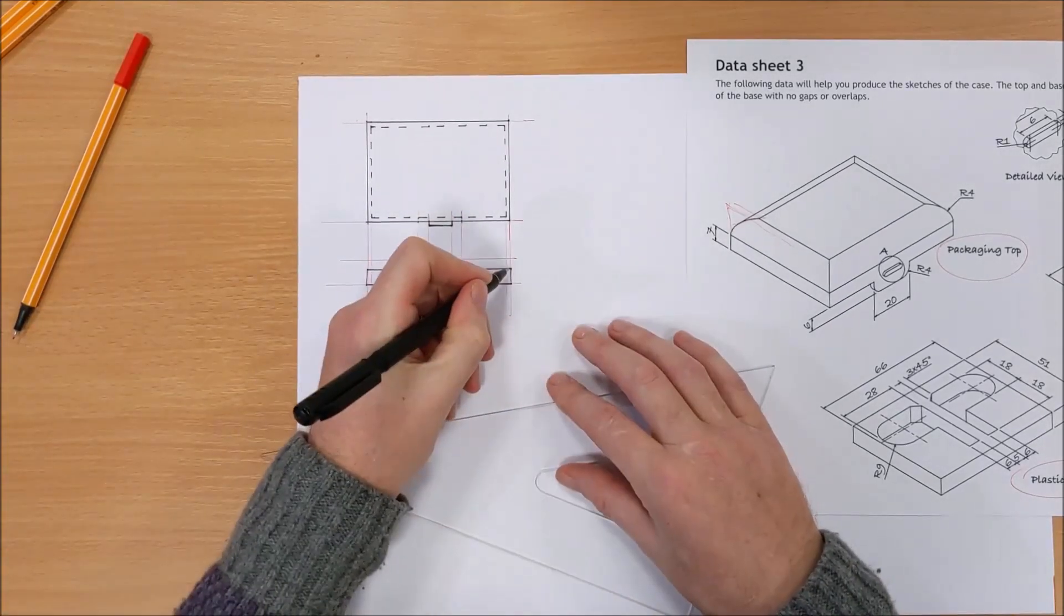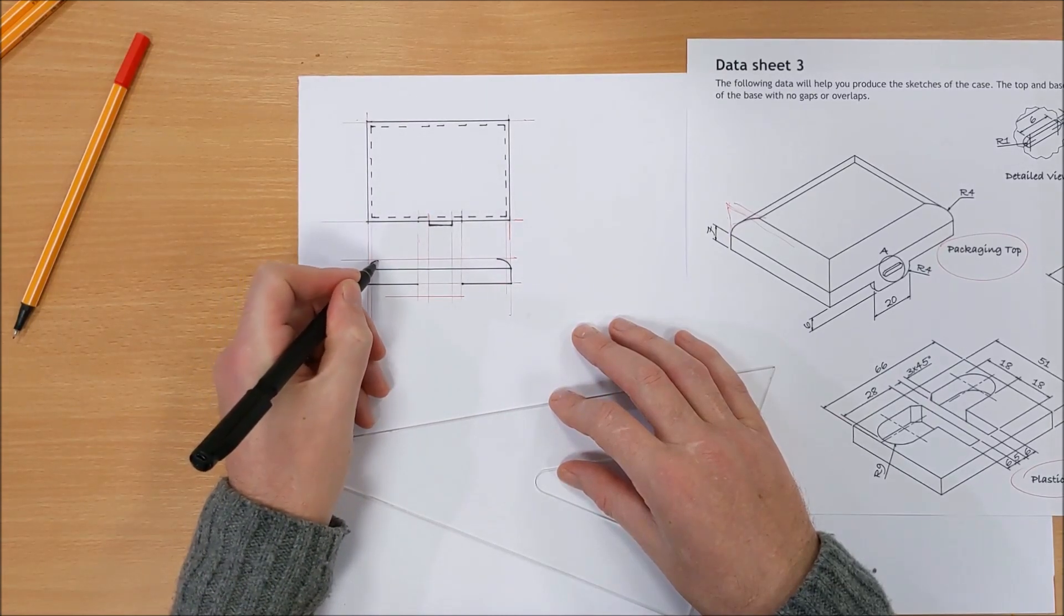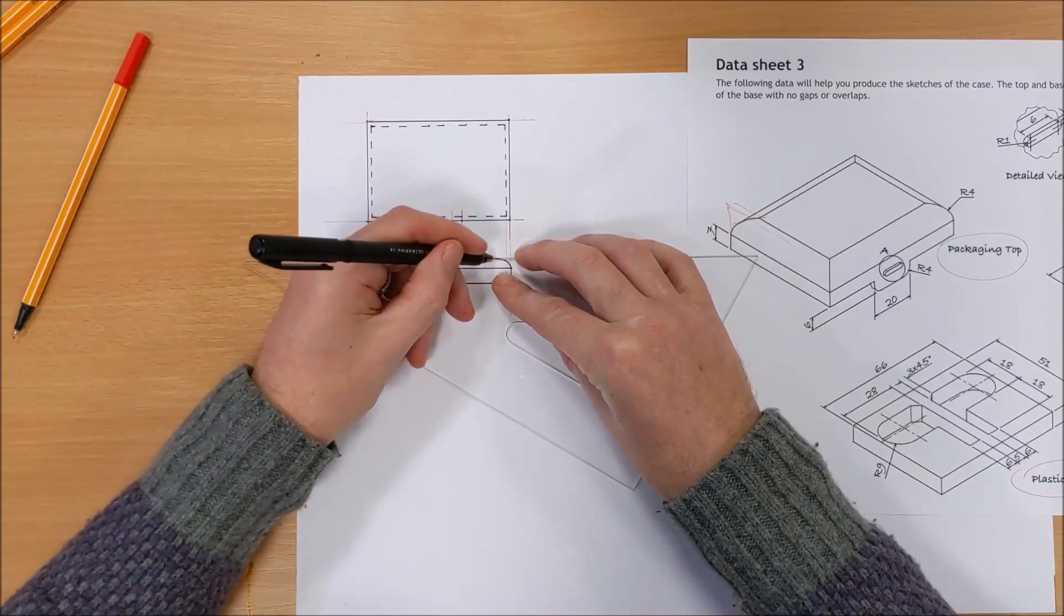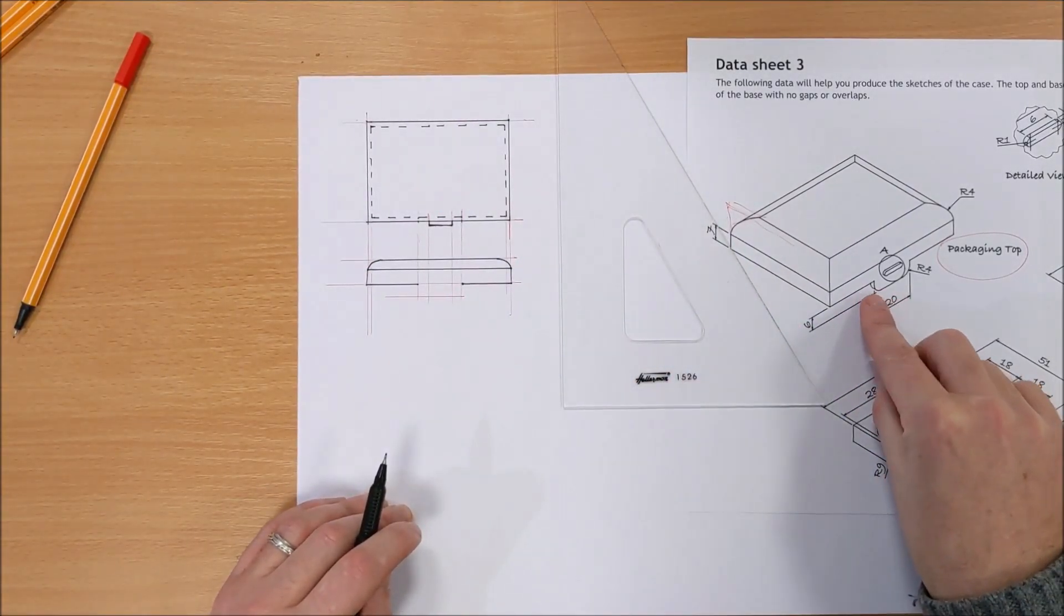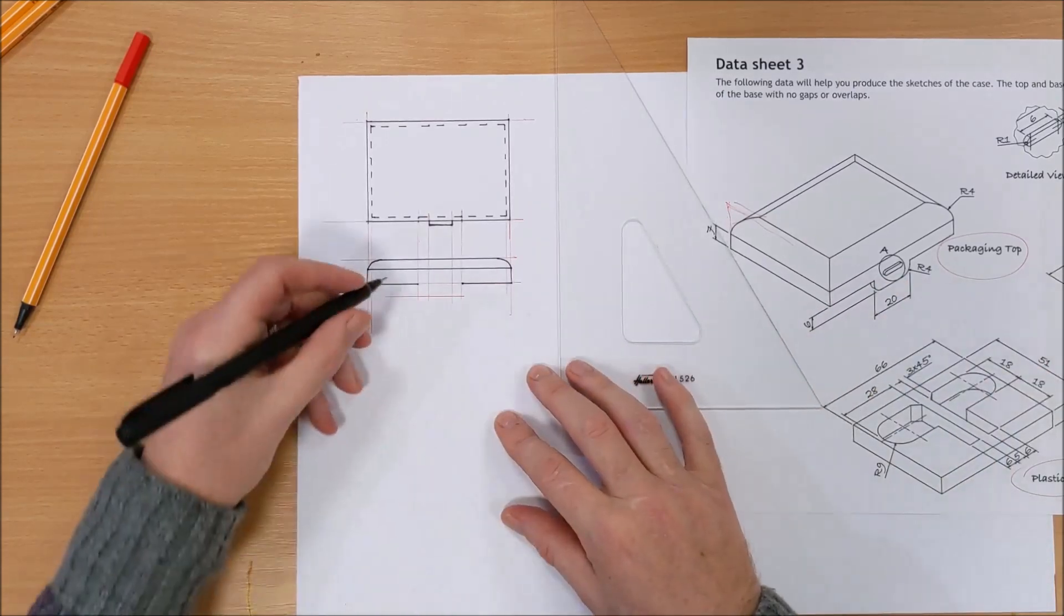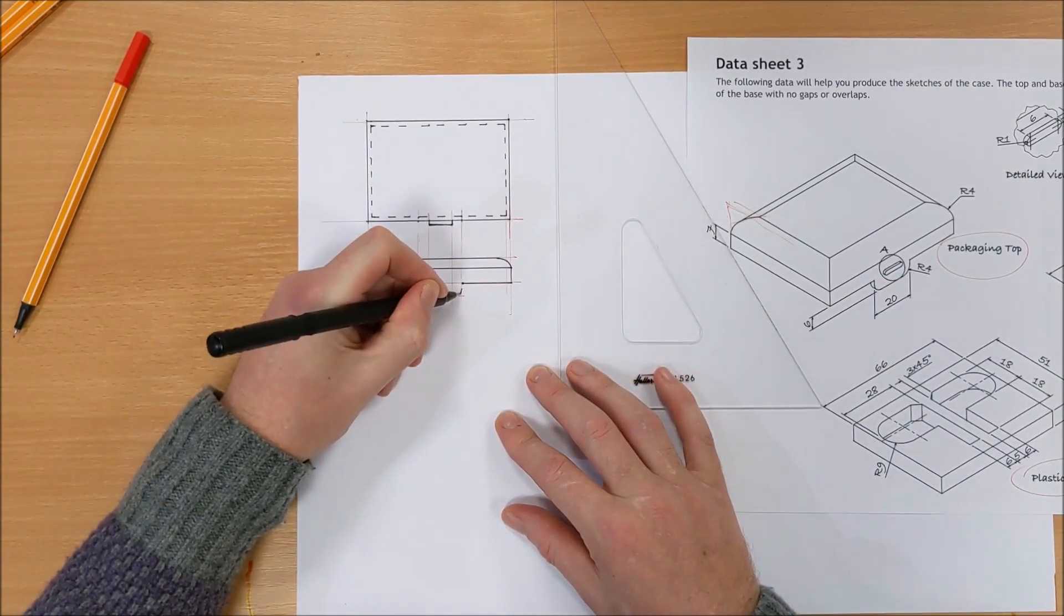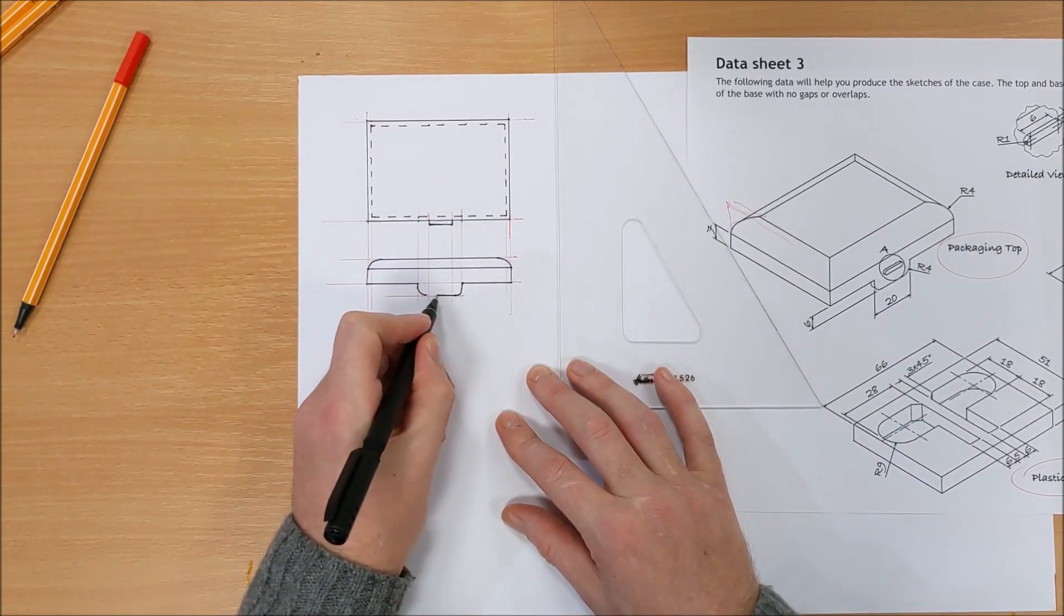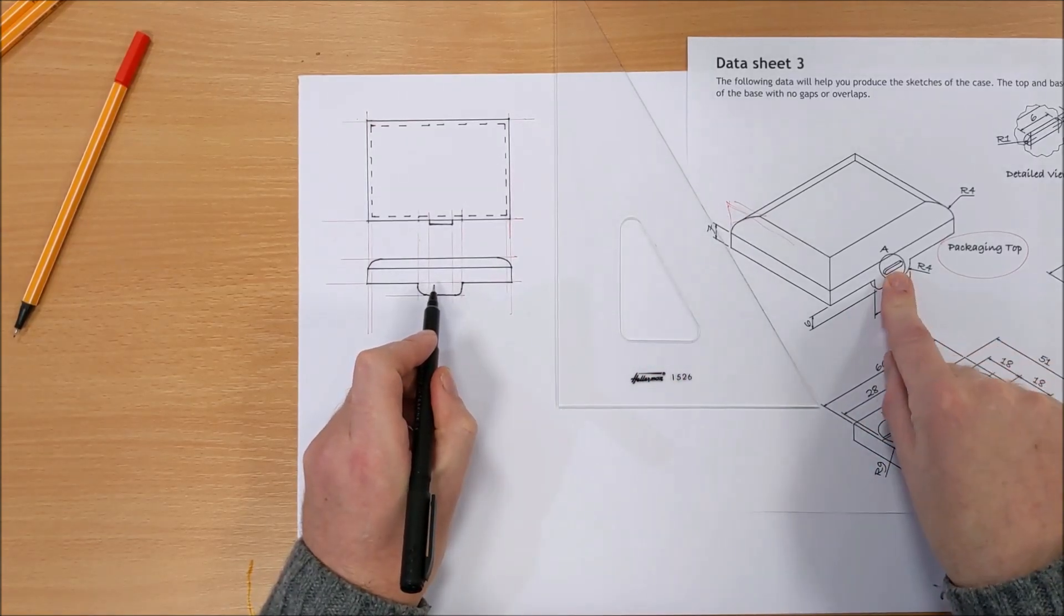And there. Down and down. A radius 4. Freehand draw it. Don't lose sleep over it being perfectly 4 millimeters. Darken that in. Darken that in. You'll notice there's a curve here. Radius 4 again. So you just want to come down a wee bit and it should look about the same as that. Which I'm happy with. It does.